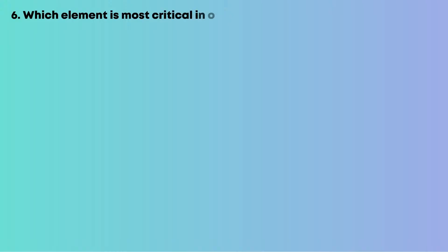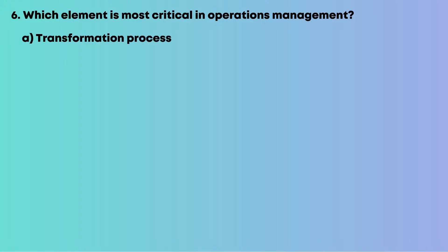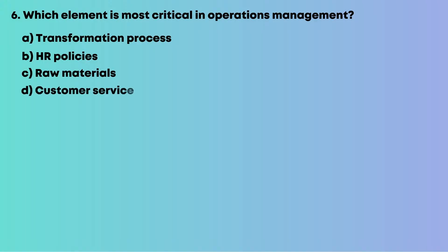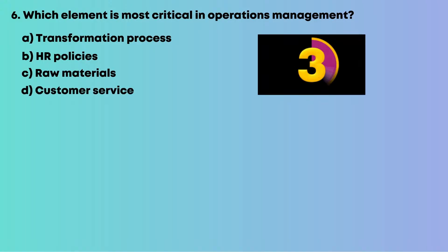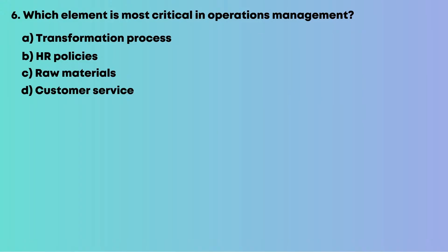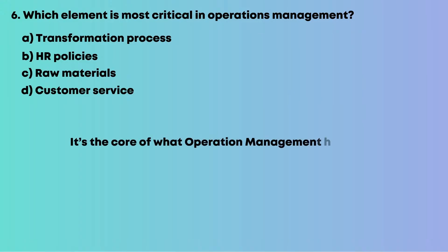Question 6: Which element is most critical in operations management? Options are: A, transformation process; B, HR policies; C, raw materials; D, customer service. It's the core of what operations management handles — converting inputs to outputs. The answer is A, transformation process.